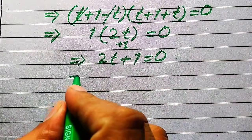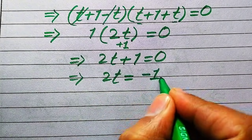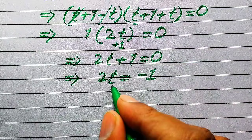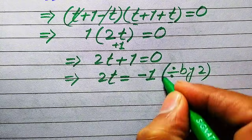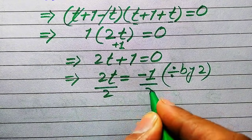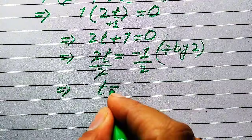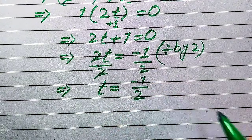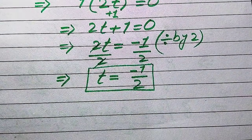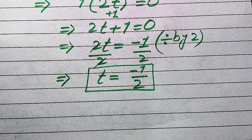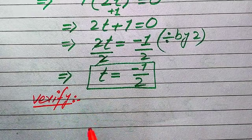So here we need to find the values of t. For this we move the plus 1 to the right hand side and it becomes 2t equals minus 1. Now to isolate t we divide both sides by 2, so this 2 and this 2 cancel out by each other and we get t equals minus 1 over 2. So this is the only one root of the given equation which we get from the first method.